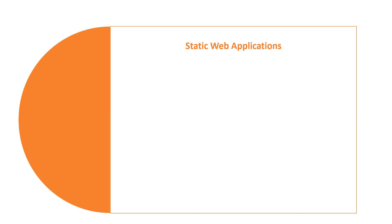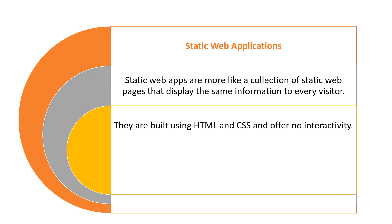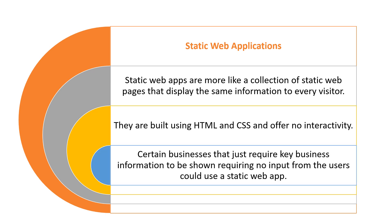First is static web applications. These are more like a collection of static web pages that display the same information to every visitor. They are built using HTML and CSS and offer no interactivity. Certain businesses that just require their key business information to be shown, requiring no input from users, could use a static web app.